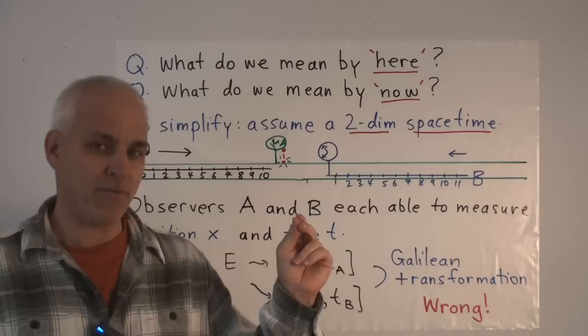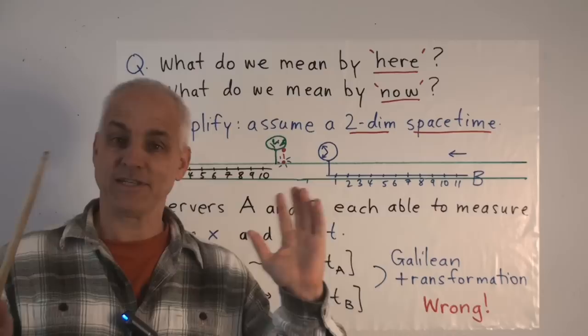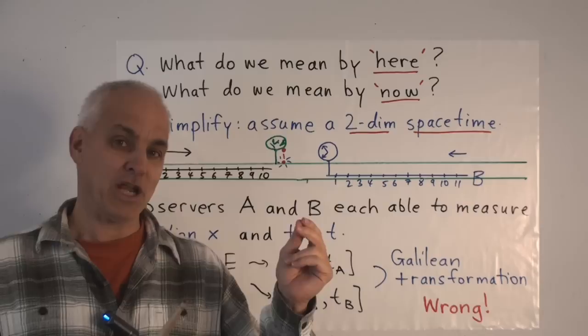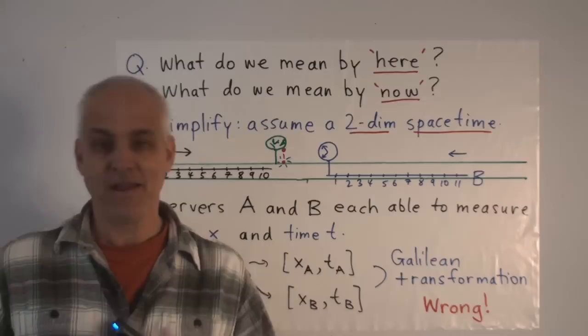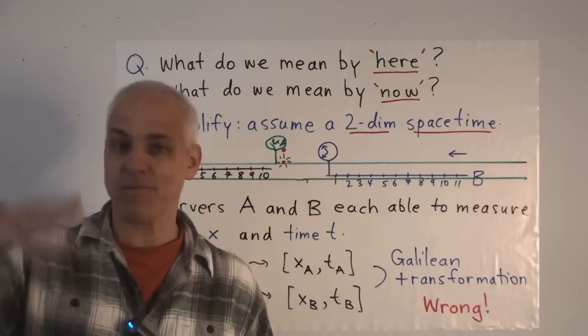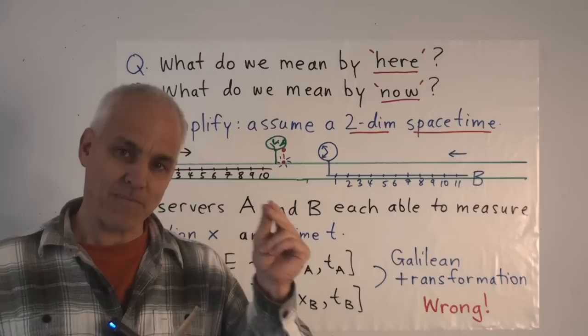For example, suppose that I say, let's talk about this point right here. Call that here. Well, that may be a stationary point as far as we're concerned. But in fact, the earth itself is actually spinning around once every 24 hours. So what seems to be stationary to us relative to the earth is, in fact, to an outside observer, moving quite dramatically, spinning around. And moreover, the earth is rotating around the sun once a year. And the sun and the solar system is itself moving through the galaxy. And the galaxy is no doubt moving with respect to other galaxies.